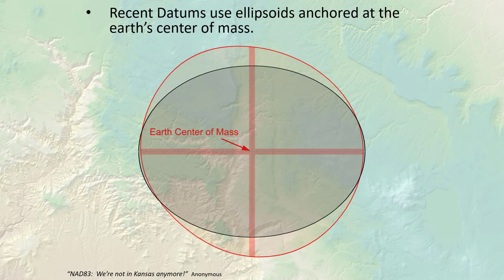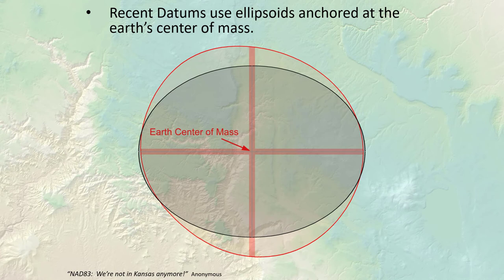In the last few decades we've become much more interested in datums that can be used globally. The GPS system requires a global datum called WGS 1984, or the World Geodetic Survey of 1984. Another common one is NAD 83, the North American Datum of 1983, which is actually pretty close to WGS 84. An interesting thing about NAD 83 is that it's designed to adapt over time — it rotates slowly along with the North American continental plate, so every 10 or 15 years a new version is released with slight adjustments.